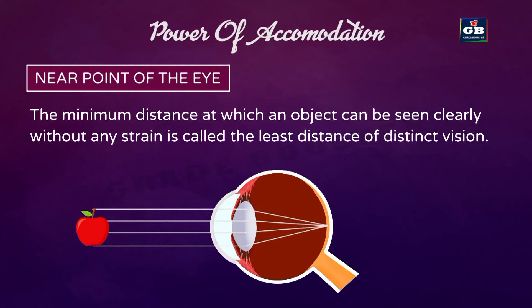You will be able to see your notes or textbook at some distance from your eye. If you bring your book very close, your vision will be blurred and your eyes feel strain. The distance at which you can clearly see without any strain is the near point of the eye — approximately 25 cm for a normal adult eye.